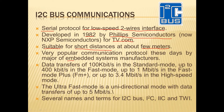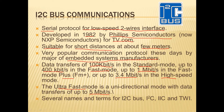I2C is very popular and used by many embedded system manufacturers and designers. The data transfer rate starts at 100 kilobits per second in standard mode, can go up to 400 kilobits per second in fast mode, then 1 megabit per second in fast mode plus, 3.4 megabits per second in high speed mode, and the ultra-fast mode can support 5 megabits per second.